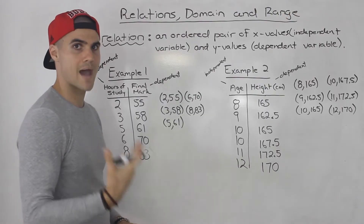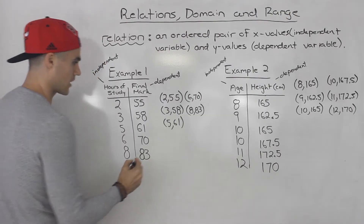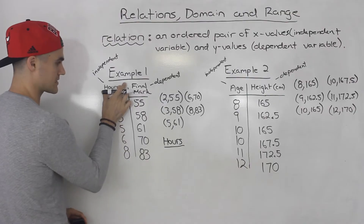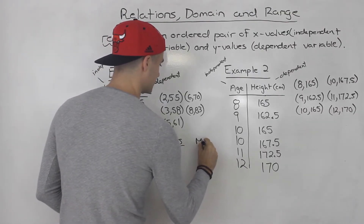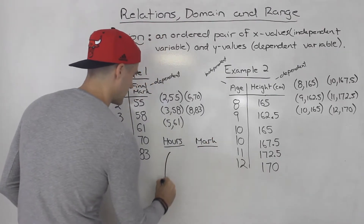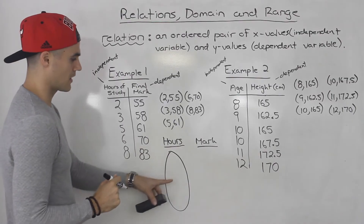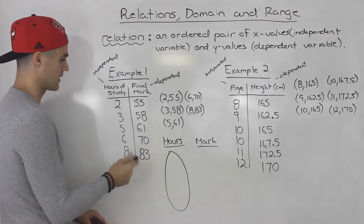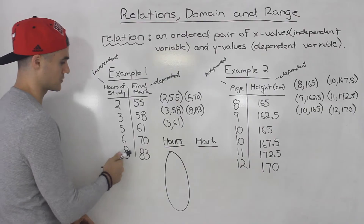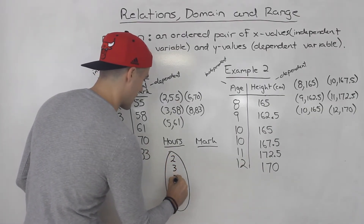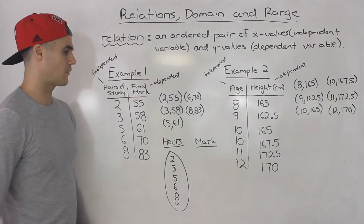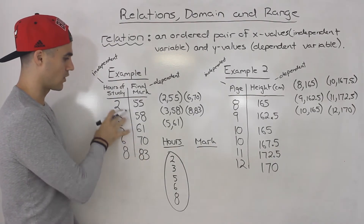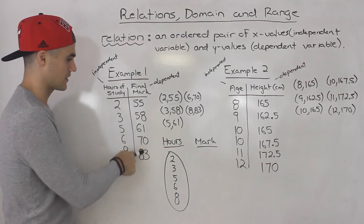You can also represent a relation in something called a mapping diagram. The way a mapping diagram works is basically like two boxes. So for the hours of study versus the final mark, we make a box and list out all of the independent variables from lowest to highest. One important thing about mapping diagrams: you never want to write the same variable twice. So we'd have 2, 3, 5, 6, and 8 — nothing repeats.